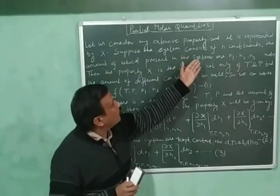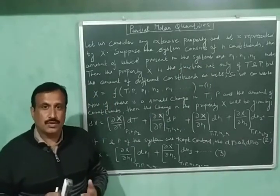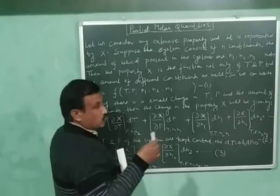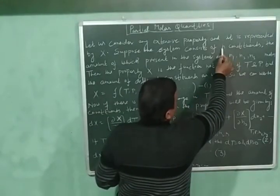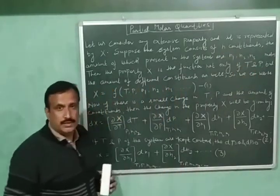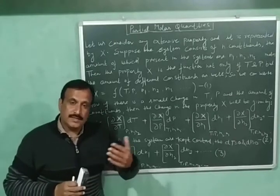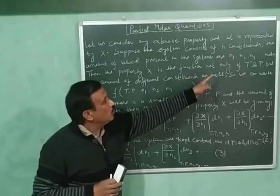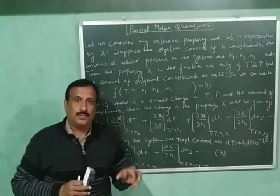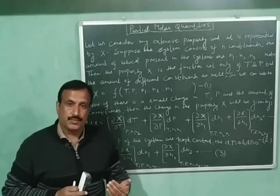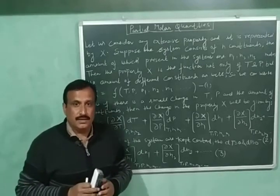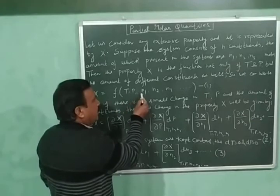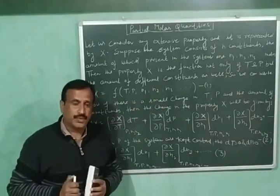Suppose the system consists of n constituents — it could be a solution or any heterogeneous system. n₁ are the number of moles of the first constituent, n₂ of the second, n₃ of the third, and likewise. Since the system is now an open system, the property X is a function not only of temperature and pressure, but also of the number of moles of all the different constituents. Mathematically: X = f(T, P, n₁, n₂, n₃, ...) — this is Equation 1.